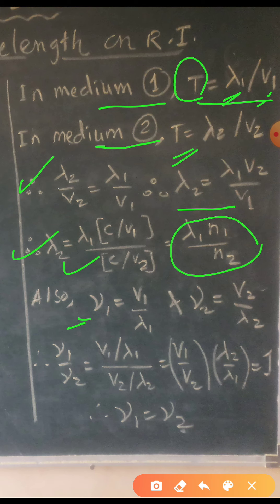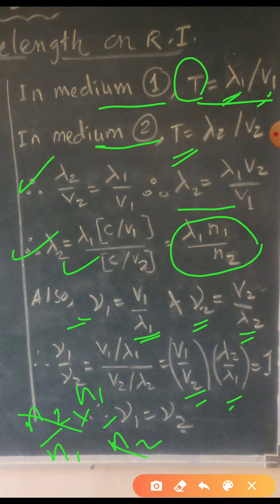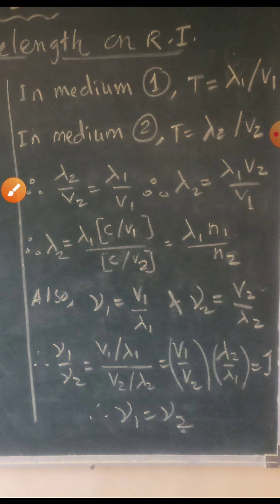Also, we can discuss about frequency, denoted by Greek alphabet nu. In medium 1, nu 1 is equal to V1 upon lambda 1, and nu 2 is equal to V2 upon lambda 2. Taking the ratio, we get V1 upon V2 multiplied by lambda 2 upon lambda 1. But V1 upon V2 is equal to N2 upon N1, and lambda 2 upon lambda 1 means N1 upon N2. N1 and N2 cancel, meaning the answer is 1. That is, nu 1 is equal to nu 2.